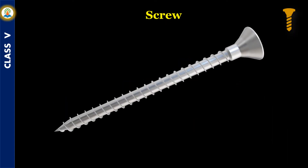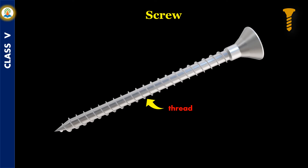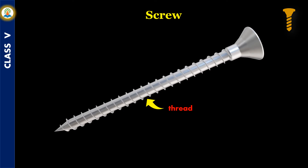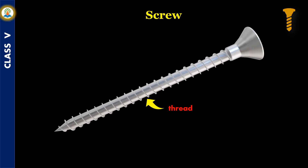A screw is a curved slope which is wrapped around a cylinder. It looks like a nail with grooves cut in it, with a winding edge called a thread. Examples of screws are the screw cap of a bottle and a screw jack.